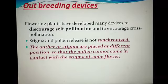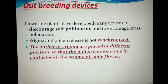The first one is that stigma and pollen release are not synchronized. That means either the pollen is released before the stigma becomes receptive, or the stigma becomes receptive before the release of pollen — meaning stigma and pollen may not be mature at the same time.